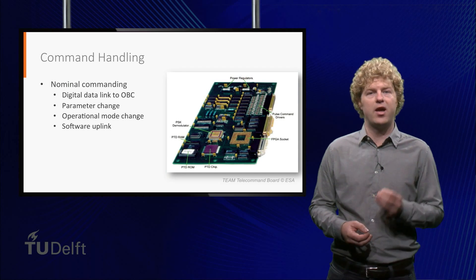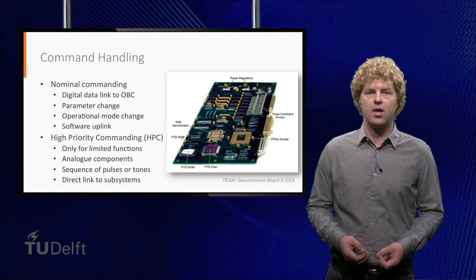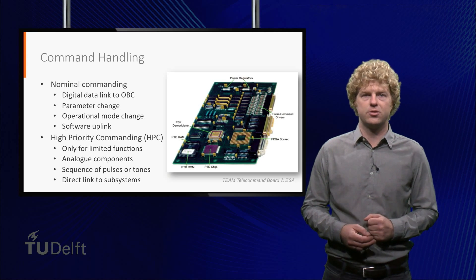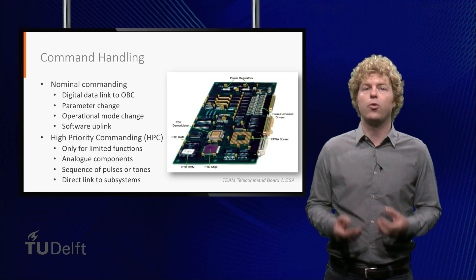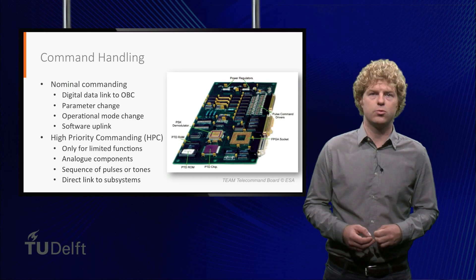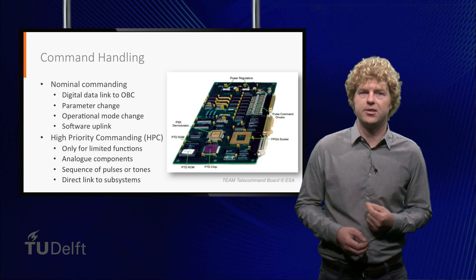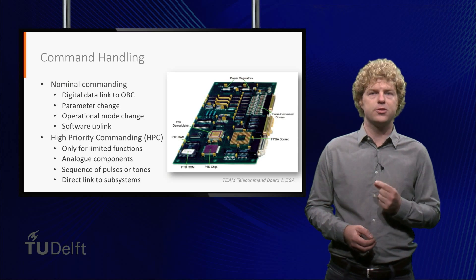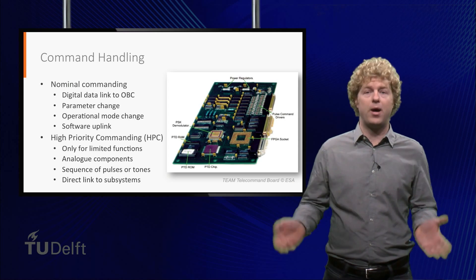Many satellites have therefore implemented an alternative route called high-priority commanding. High-priority commands are only for a limited set of critical functions, for instance switching a subsystem on or off or resetting it to default configuration. This route typically uses only analog components, which are less prone to radiation effects. These effects will be explained in a later session. High-priority commanding works with a sequence of pulses or tones and links directly to the subsystem, for instance the electrical power subsystem.